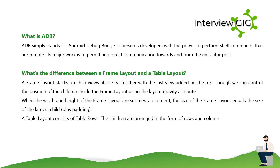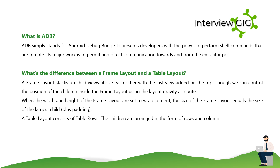What is the difference between a FrameLayout and a TableLayout? A FrameLayout stacks child views above each other, with the last view added on top. You can control the position of children inside the FrameLayout using the layout_gravity attribute. When width and height are set to wrap_content, the FrameLayout size equals the size of the largest child plus padding. A TableLayout consists of table rows where children are arranged in the form of rows and columns.